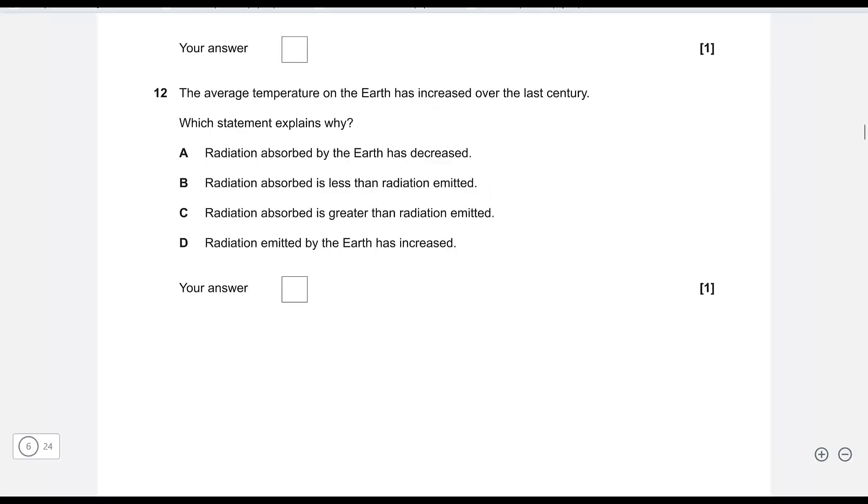Next one: the average temperature on Earth has increased over the last century. Which statement explains why? Radiation absorbed by the Earth has decreased—that's not correct, it wouldn't have led to that result. Radiation absorbed is less than radiation emitted—that would have led to the temperature decreasing. Radiation absorbed is greater than radiation emitted—this has to be correct.